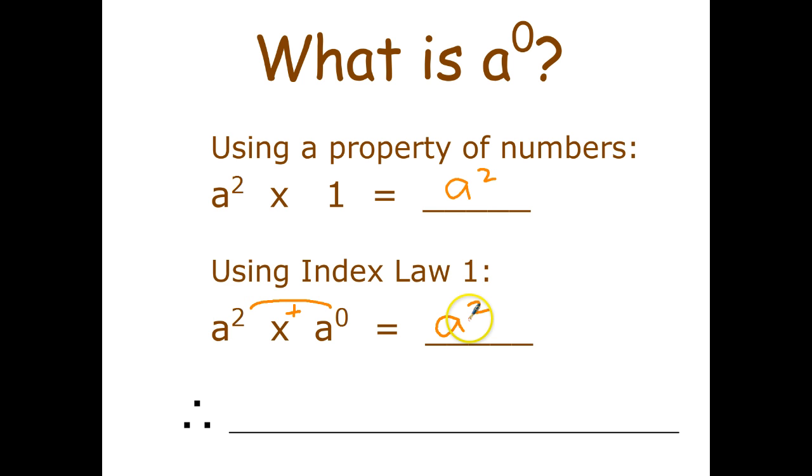That's the same. That's the same. Therefore those must be the same. If a squared times 1 gives me a squared and if a squared times a to the zero gives me a squared it must be true that a to the zero equals 1. And that's because those have to be equal if both of those statements are true. So raising any number to the zero power we interpret that to be 1.